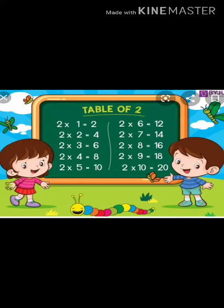Let us revise table of two. 2 1s are 2, 2 2s are 4, 2 3s are 6, 2 4s are 8, 2 5s are 10, 2 6s are 12, 2 7s are 14, 2 8s are 16, 2 9s are 18, 2 10s are 20.